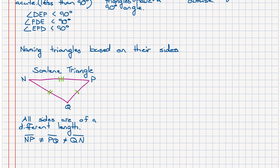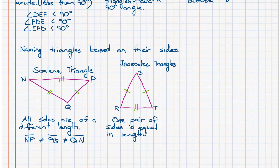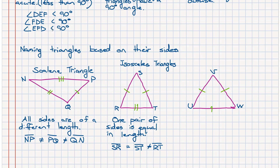The next triangle has two sides that are the same length. We call this particular one an isosceles triangle — notice the spelling. In an isosceles triangle, one pair of sides is equal in length. In this case, side SR is equal to side ST, but they are not equal to RT. There is one more triangle to look at, and in this one notice that all the sides are the same.